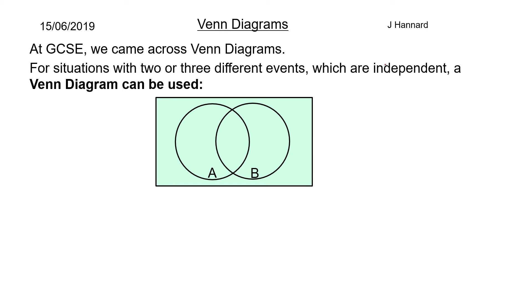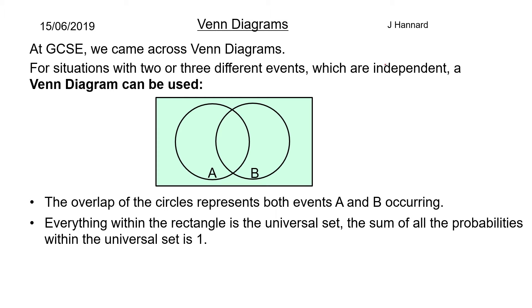So we've got our two little circles there. You all know what a Venn diagram looks like. The overlap of the circles represents both events A and B occurring. Everything within the rectangle is the universal set. The sum of all probabilities within the universal set is 1.